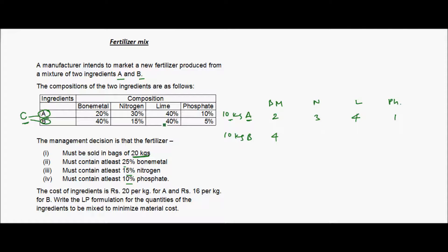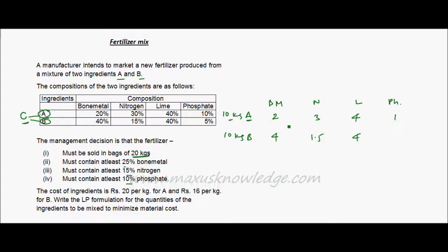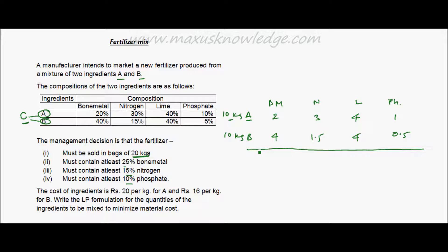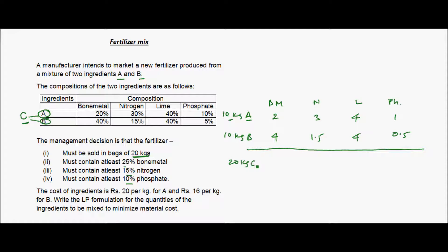For ingredient B: nitrogen is 15% of 10 = 1.5 kgs, bone metal is 40% of 10 = 4 kgs, and phosphate is 5% of 10 = 0.5 kgs. Adding A and B together, the 20 kg bag of C contains: bone metal = 6 kgs, nitrogen = 4.5 kgs, lime = 8 kgs, and phosphate = 1.5 kgs.